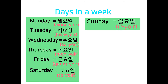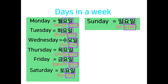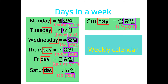Now, we can see that all these words have 요일 in their name, just like all English names have the word 'day' in common. In a calendar, this 요일 is sometimes omitted and the days are written as 월, 화, 수, 목, 금, 토, 일.